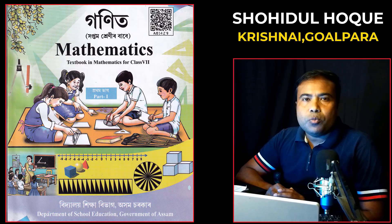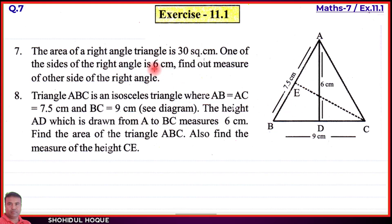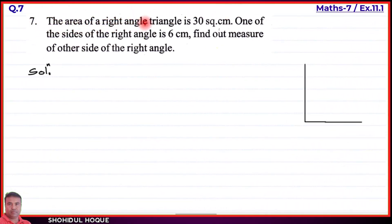This is mathematics class 7, new book part 2, exercise 11.1, English medium. Question number 7: the area of a right angle triangle is 30 square centimeters, and one of the sides of the right angle is 6 centimeters.